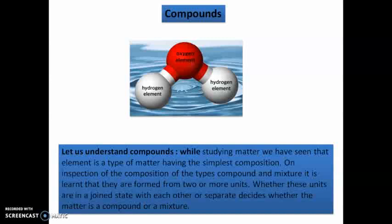Coming to compounds — a compound is a mixture of two or more elements in a fixed proportion. On inspection of the types of compounds and mixtures, we see that they are both formed from two or more units. Whether these units are joined together or separate decides whether the matter is a compound or a mixture. If they are joined together, it forms a compound. For example, water is a compound with two hydrogen elements and one oxygen element.